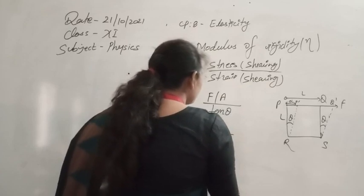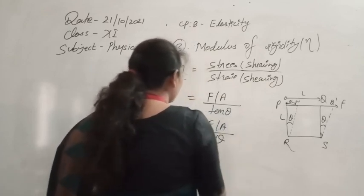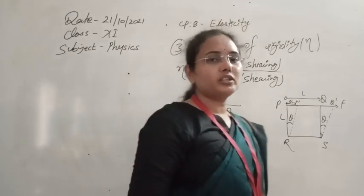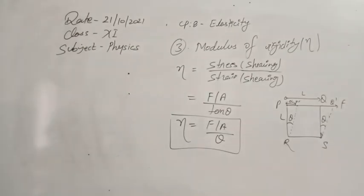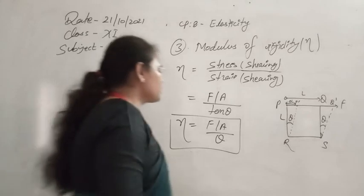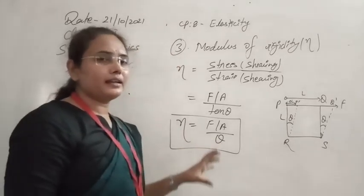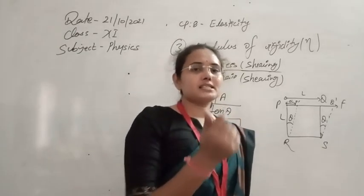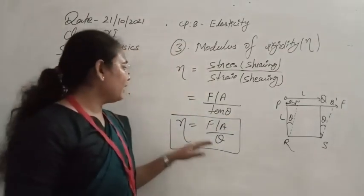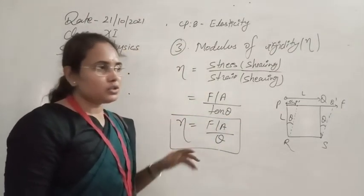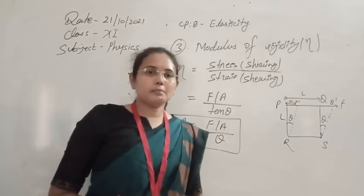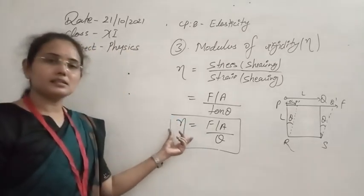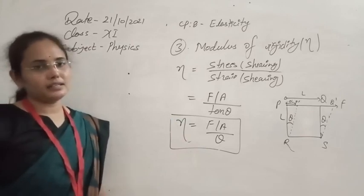So these are the formulas for modulus of rigidity: η = shearing stress / shearing strain = (F/A) / θ. These formulas tell us about the properties of the material — whether it will deform on application of a deforming force. If η is very large, then the deformation will be very small. How much torsion is created in a wire can be calculated using its modulus of rigidity. This is why we call it modulus of rigidity — it tells us how rigid the body is.